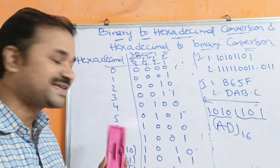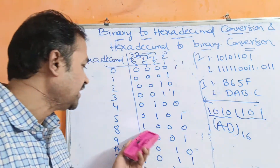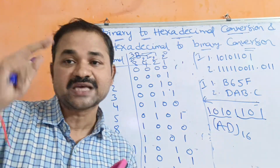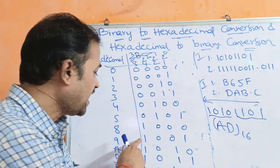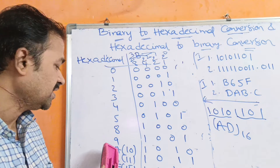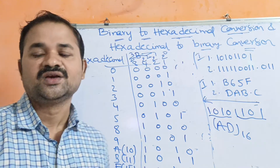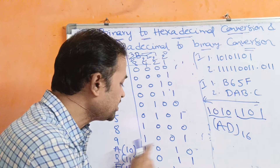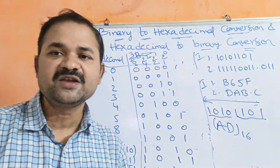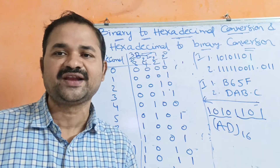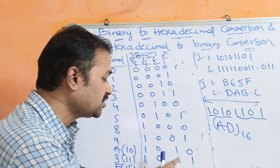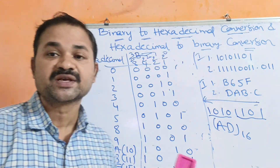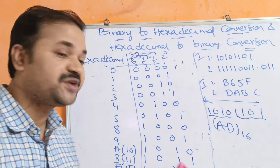Next, 8 means we write 1 in the 8 position, remaining positions 0. Next, 9 is the sum of 8 and 1, so we write 1 in the 8 position and 1 position. 10 is the sum of 8 and 2, so we write 1 in the 8 position and 2 position. 11 is the sum of 8, 2, and 1, so we write 1 in the 8th position, 2 position, and 1 position. Next, C, D, E, F. F means 15, and 15 means we write 1 in all positions.